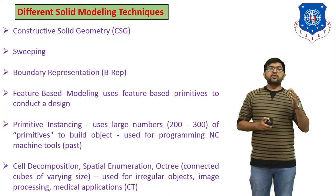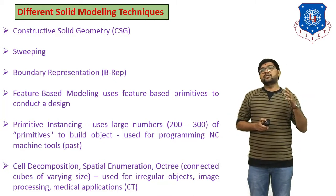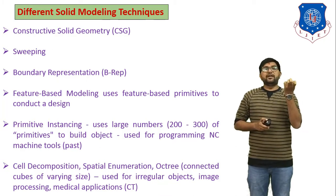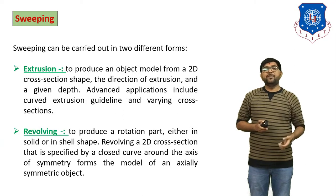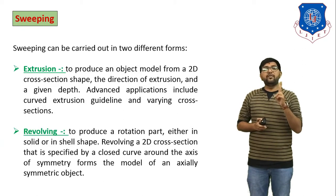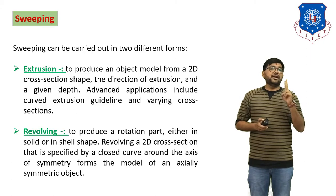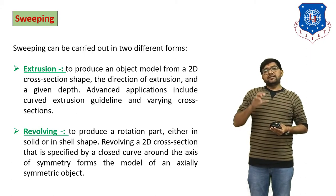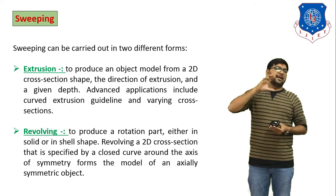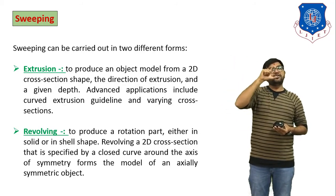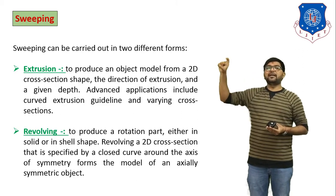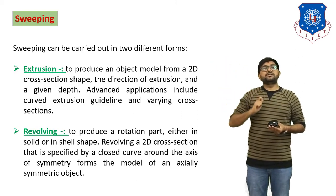Constructive solid geometry and boundary representation are the most important methods for converting a model from 2D to 3D or generating a 3D object. The first method we discuss today is sweeping. Sweeping can be carried out in two different forms: extrusion and revolving. In extrusion sweeping, we have a cross section of a body, give it a path, the cross section moves along that path, and generates a 3D object.